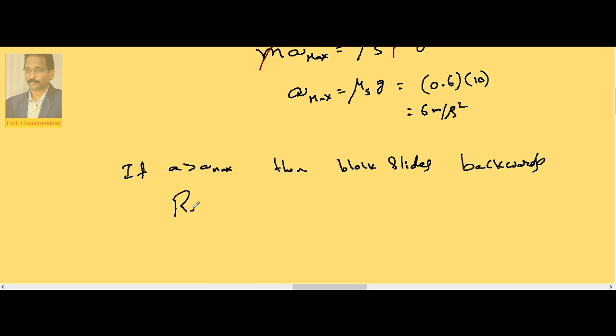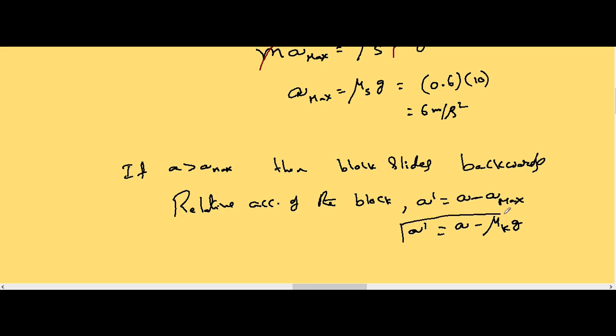The relative acceleration of the block now becomes, if I call it A', it is A minus A maximum. With this relative acceleration, it starts moving backwards. But once the body comes into motion, it is not μs. Now it is μk into g. Because here the body is in motion, once we say body is in motion, it is not μs, it is μk that is responsible. So A minus μk into g is the relative acceleration of the block.